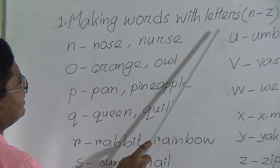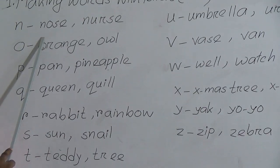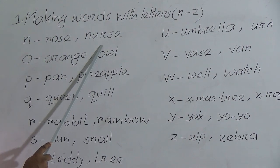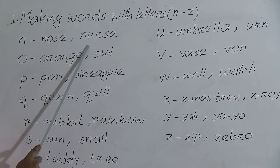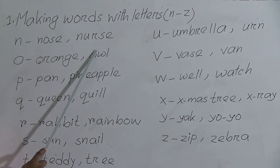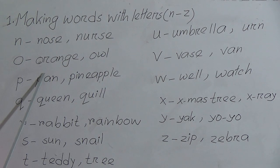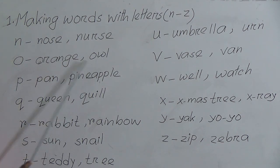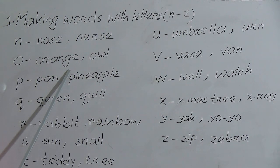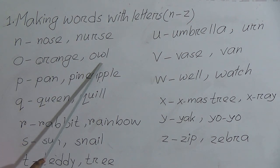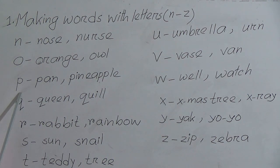So we will read again: making words with letters N from Z. N for nose, N-O-S-E. N for nurse, N-U-R-S-E. O for orange, O-R-A-N-G-E. O for owl, O-W-L. P for pan, P-A-N. P for pineapple, P-I-N-E-A-P-P-L-E.